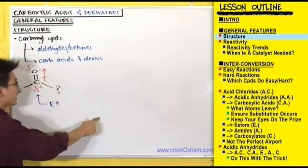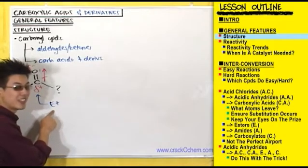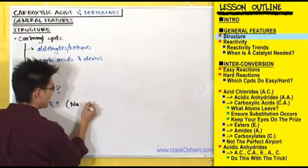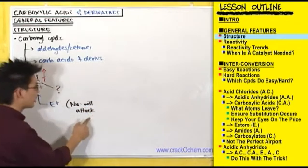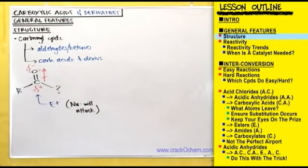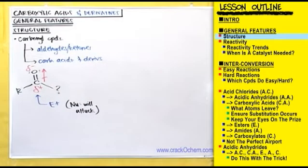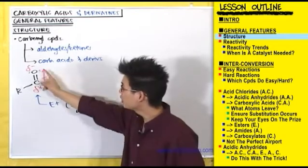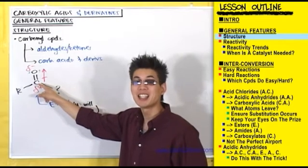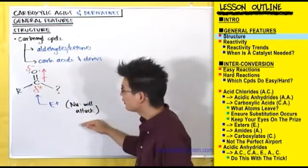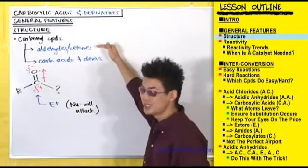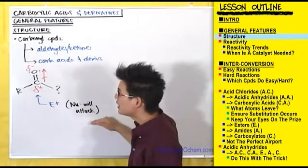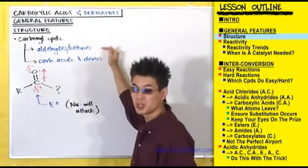So this carbon is essentially saying it needs electrons because oxygen is taking them away, implying that a nucleophile will attack it to share electrons. Anytime you see a carbonyl compound, automatically think: oxygen is pulling electrons away from this carbon, making it electron deficient and an electrophile, so a nucleophile will very likely come and attack this carbonyl carbon — whether you're dealing with aldehydes and ketones or carboxylic acids and their derivatives. That's how these two types of carbonyl compounds are similar.